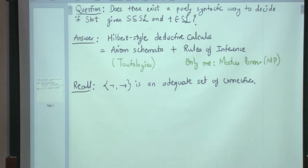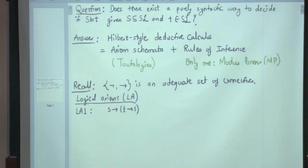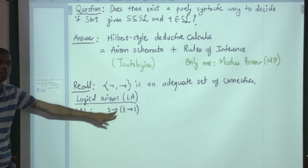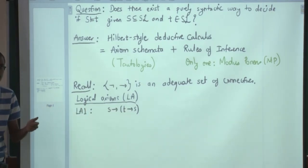So what are these axioms? We are going to call them logical axioms, short form LA. There are four of them. LA1 is the statement: S implies T implies S, for all S and T in SL. Can you check quickly? If S is false, then false implies anything is true. If S is true, then anything implies true is true. So T implies S will be true, and therefore this is a tautology.